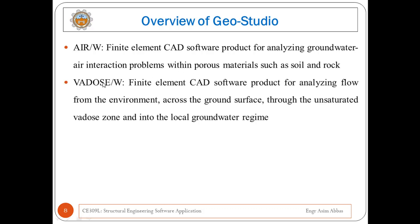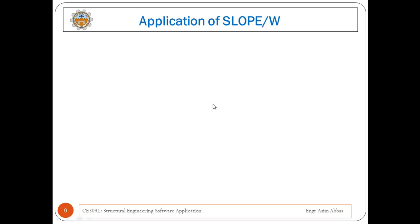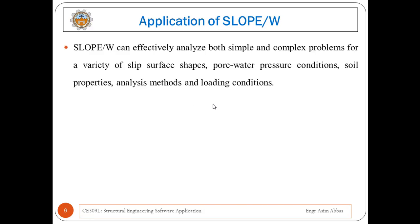Similarly, Vadose W is a finite element CAD software product for analyzing flow from the environment across the ground surface, through the unsaturated vadose zone, and into the local groundwater regime. In today's lecture, I will only discuss the application of the Slope W feature of GeoStudio.